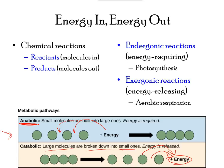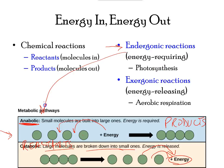In any chemical reaction, the molecules on the left-hand side of the arrow are called reactants, and the molecules or substances on the right-hand side are called products. Endergonic reactions are anabolic as they require energy to build larger molecules. Exergonic reactions are catabolic as they release energy.